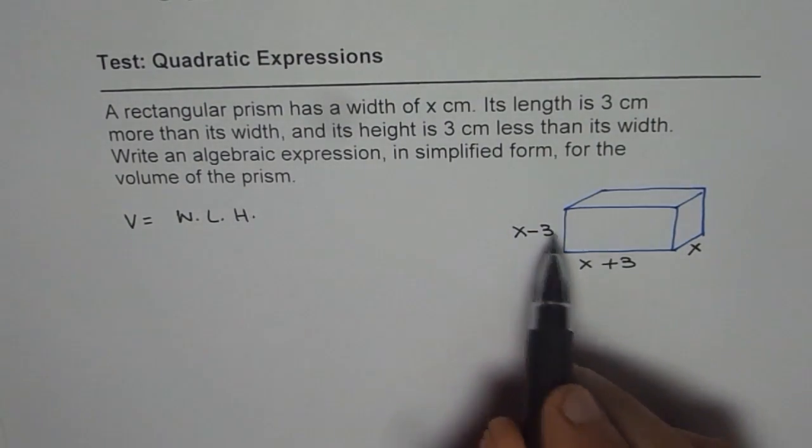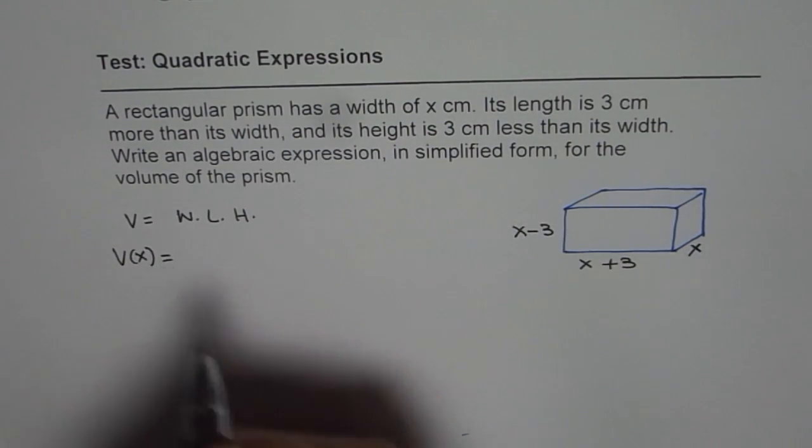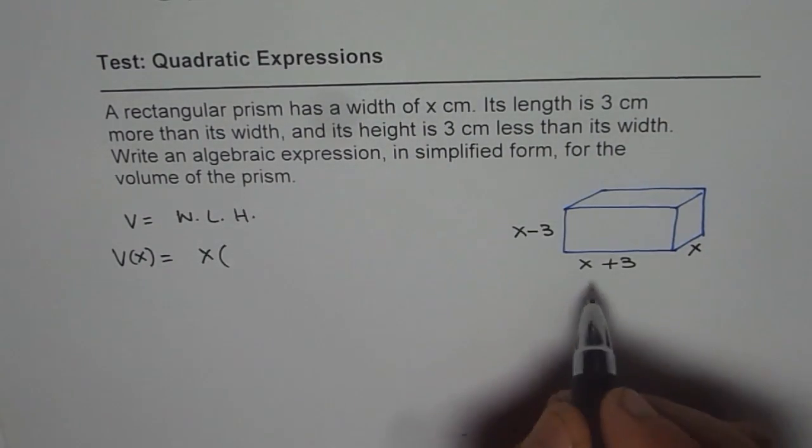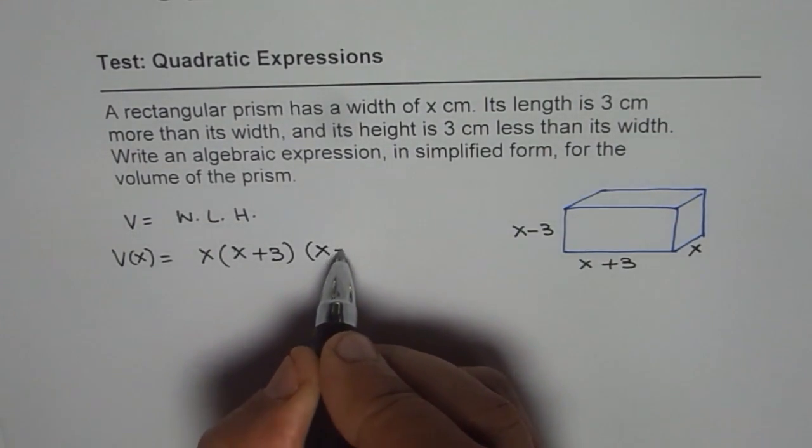Now here these terms are in x. We could also write volume in terms of x, which is width is x, times length is x plus 3, times x minus 3.